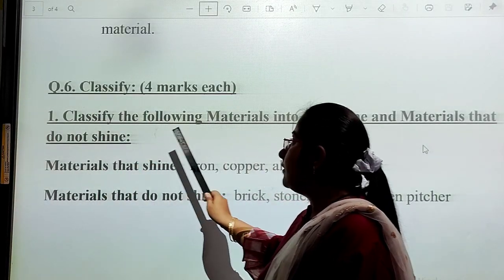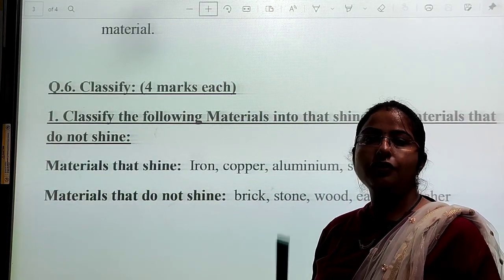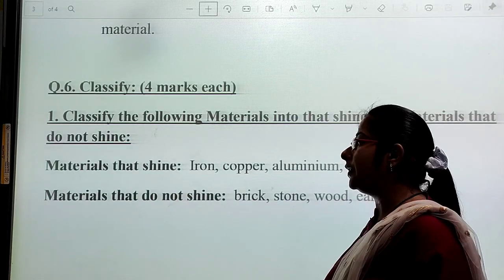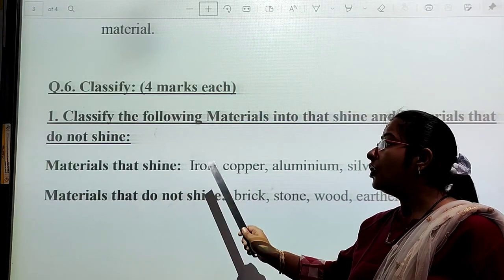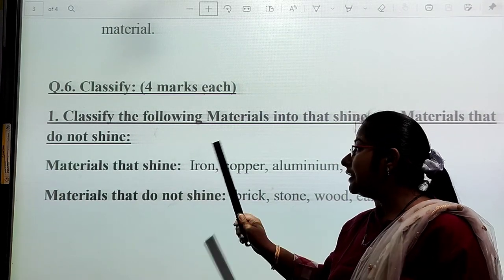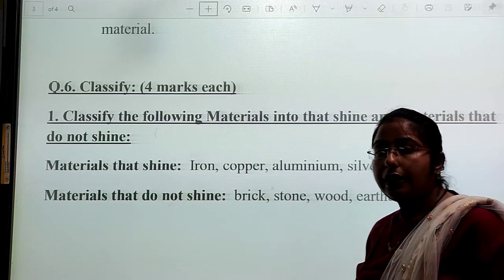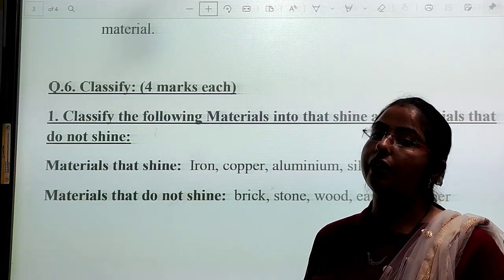Question number 6: First, classify the following materials into materials that shine and materials that do not shine. Materials that shine: iron, copper, aluminium, silver. These are all materials that shine.